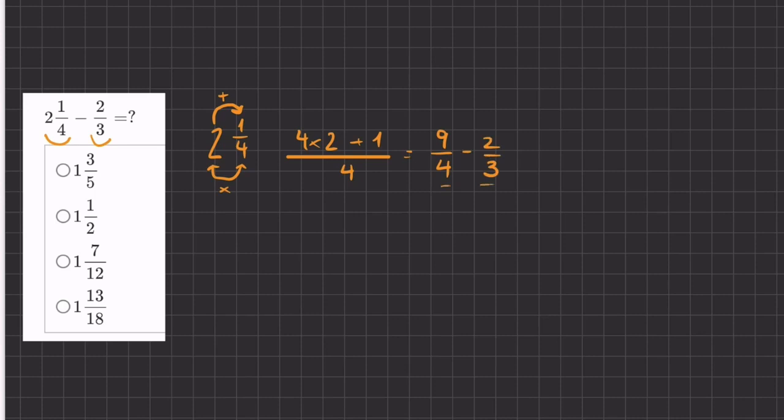Now, in order to have a common denominator, we can multiply the two denominators, 4 and 3. And for our numerators, we will multiply it by the opposite denominator. So we have 9 times 3 minus 2 times 4. And so now we have 27 minus 8, all over 12.